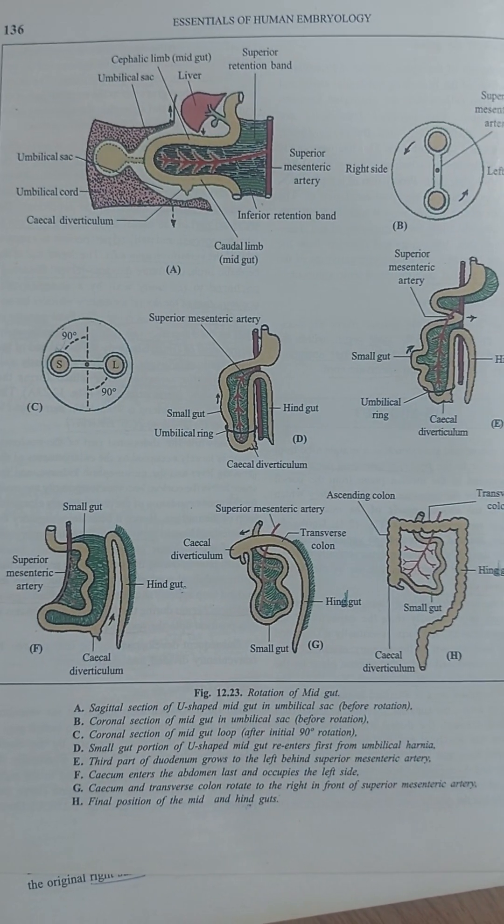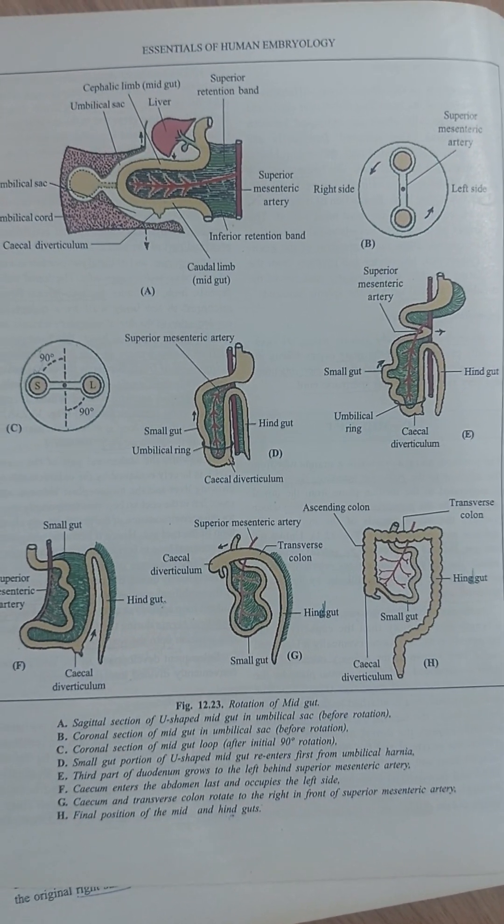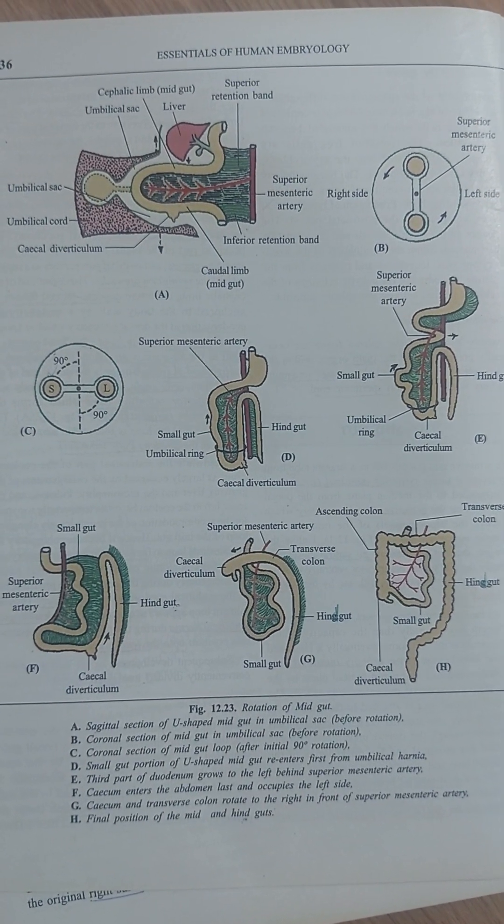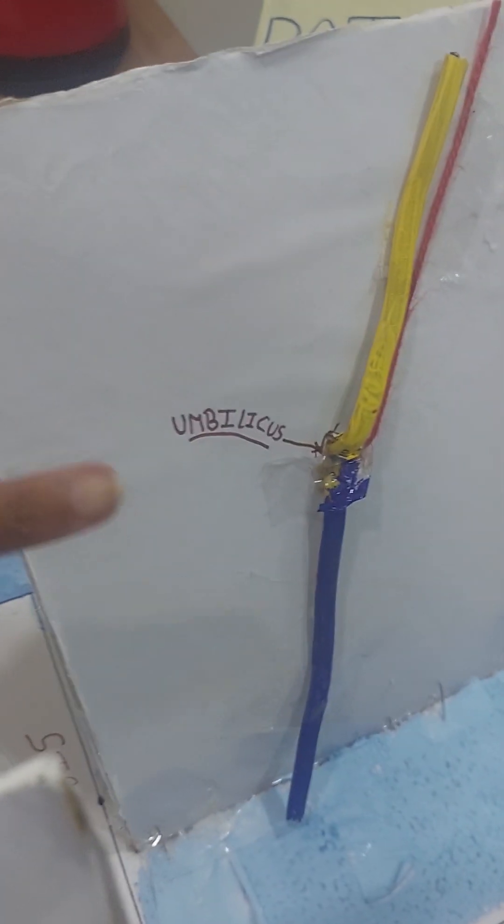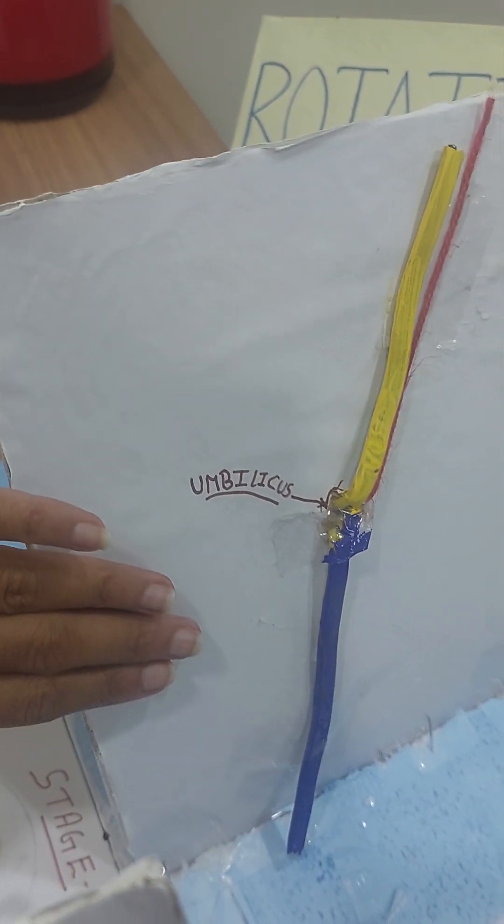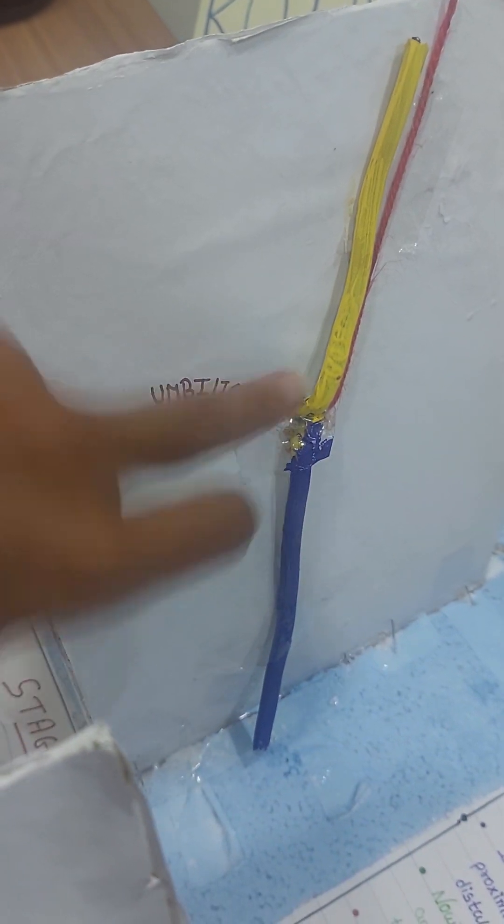Hello guys, today we'll be talking about mid-gut rotation. I have a model with me that shows mid-gut rotation, so let's go through it. As you can see, this is the anterior abdominal wall and that is the umbilicus.